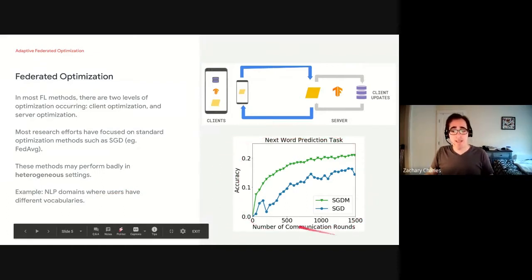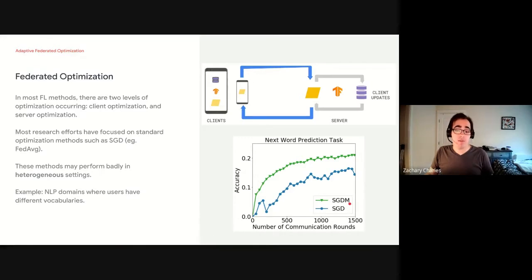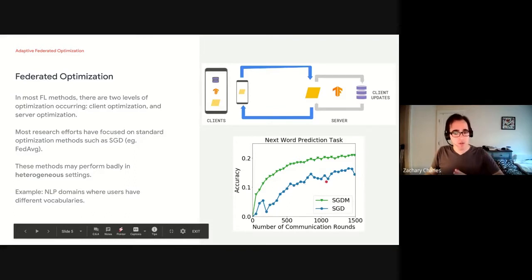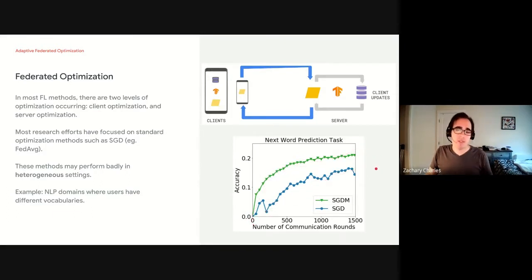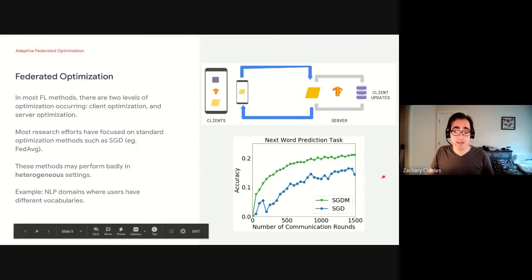And this is particularly true in natural language processing, a domain where users have very different vocabularies. So over on the right, I have a plot. This is a next word prediction task on a realistic heterogeneous data set. And we've plotted here what happens if we use SGD on the server versus SGD with momentum on the server. The clients just use SGD. And this is with tuned server learning rates and client learning rates. And what we see is that there's a huge gap between what happens with standard SGD and what happens with SGD with momentum. And this really begs the question, what else can we do? What if we start using even more sophisticated methods for optimization within our federated setup?